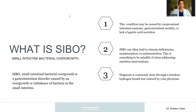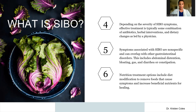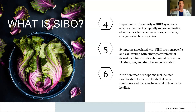The most common symptoms associated with SIBO are going to be gas — that can be burping, farting, or expansion and bloating. Then bloating, discomfort or pain in the abdomen, heartburn, and very commonly some sort of stool irregularity — it could be diarrhea, constipation, or mixed. These symptoms are all due to the gas being produced by those bacteria in the small intestine, most commonly hydrogen or methane producing, or a combination.